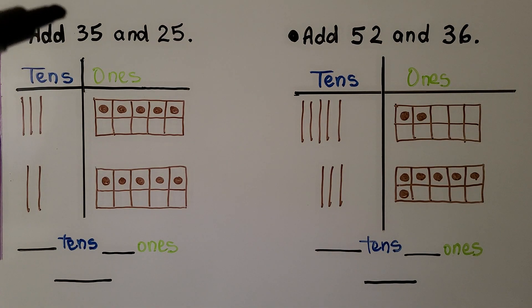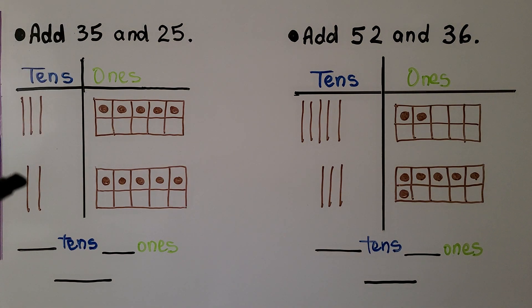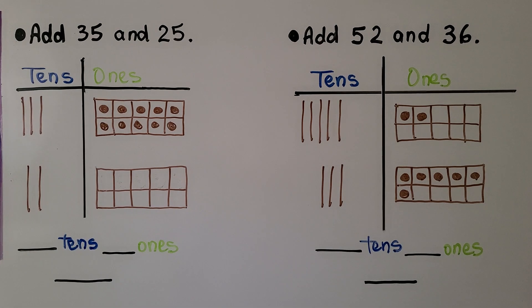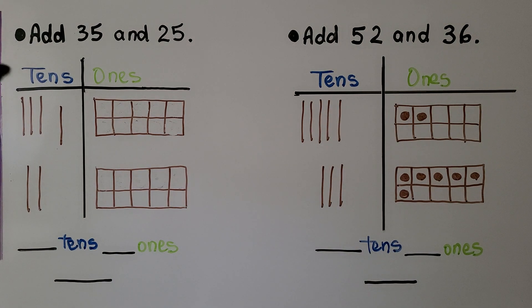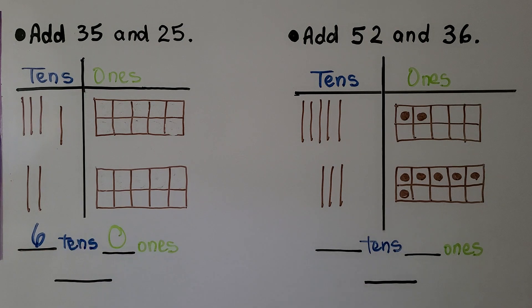We need to add thirty-five and twenty-five. That's three tens, five ones for thirty-five and two tens, five ones for twenty-five. We can put these five ones and these five ones together to make a ten. We can move these ten ones to the tens place as one ten. Now we count how many tens we have. One, two, three, four, five, six. We have six tens. There are no ones. We used them all to make that ten. So there's zero ones. That means thirty-five and twenty-five added together is sixty.